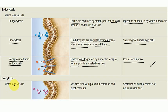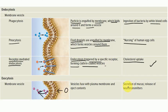In this video we discussed mainly exocytosis. Here a vesicle fuses with the plasma membrane and ejects its contents. Examples include secretion of mucus, release of neurotransmitters, hormones, and so on. Thank you.